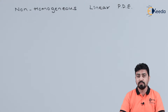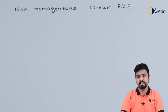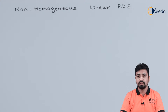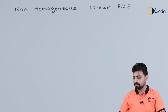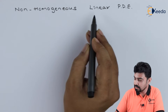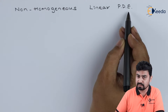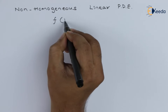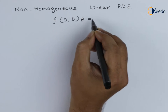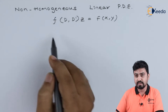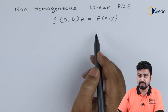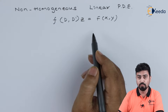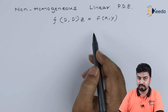After seeing partial differential equations which were homogeneous, let us see what non-homogeneous linear partial differential equations are. The format would be the same — the way to write them will be similar. A non-homogeneous linear partial differential equation can be represented in the same form as homogeneous linear partial differential equations.